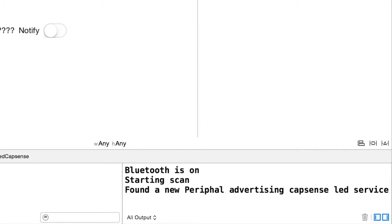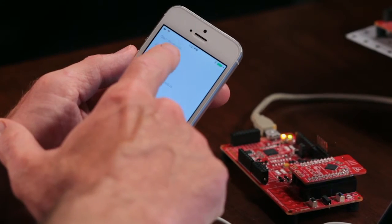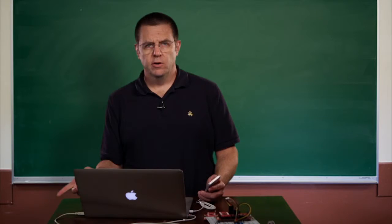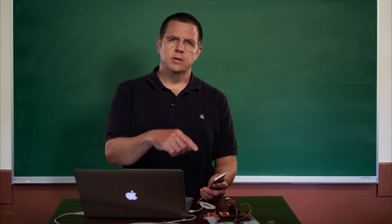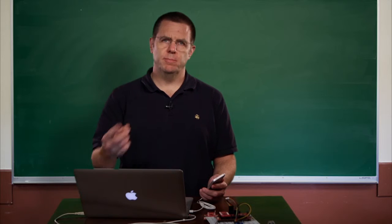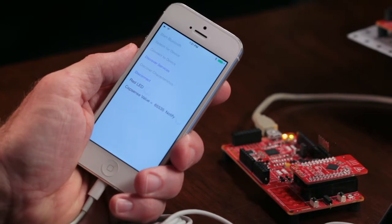Then I'll tell the CB Central Manager to actually make a connection to the device. So that tells the model to tell the CB Central Manager to make the connection. Once that's occurred, it'll say you can discover the services on that device.